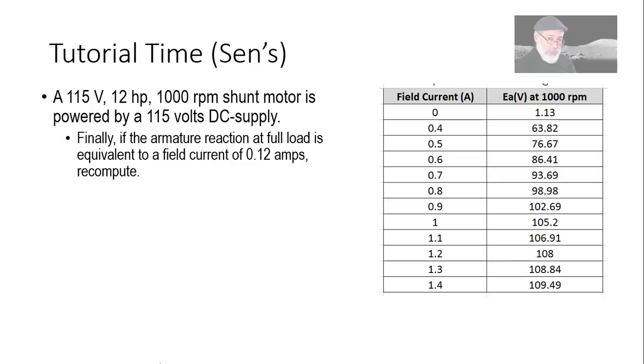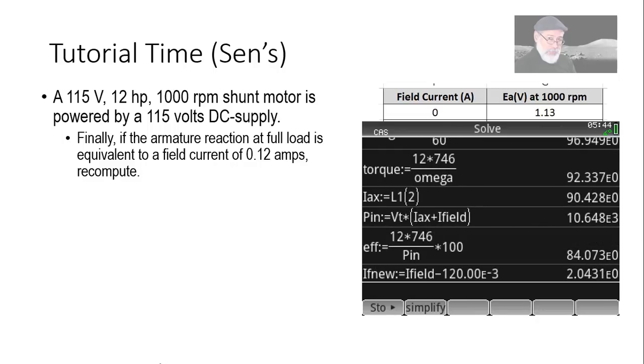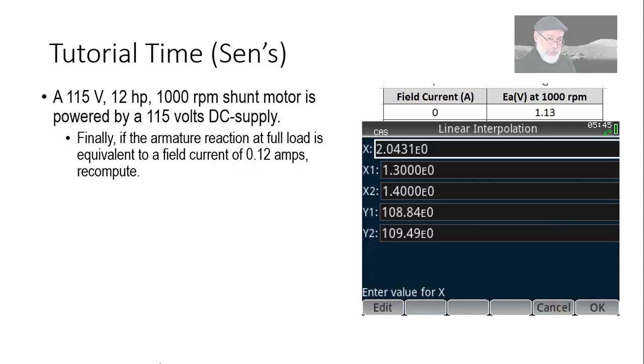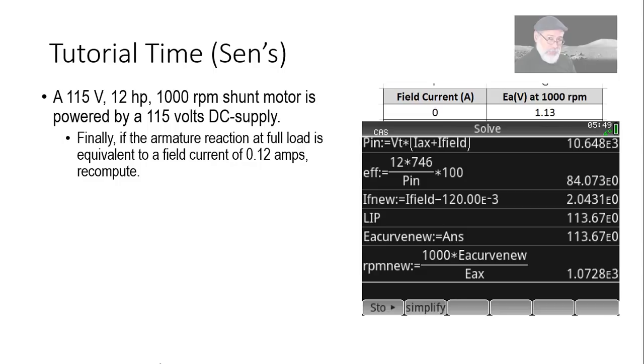Finally, they ask us, hey, wait a second, what if there is an armature reaction at full load and it is equivalent to a field current of 0.12 amperes? Recompute everything. I'll do the first part, I'll leave the second part for you guys. The new value of the field current will be what I had before, minus 0.12, correct? And then, with that value, we go to the table, and from the table, we compute what is the new value of EA, the induced voltage in the armature, 114 volts.